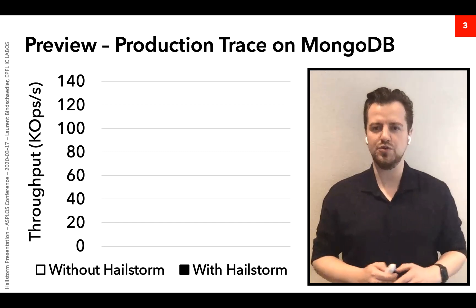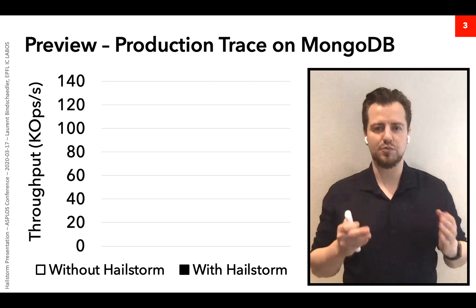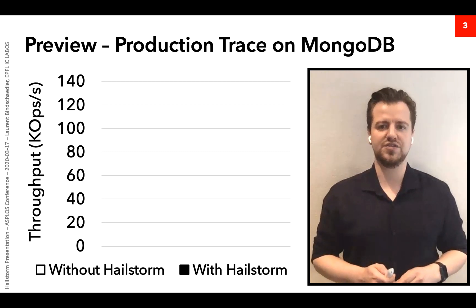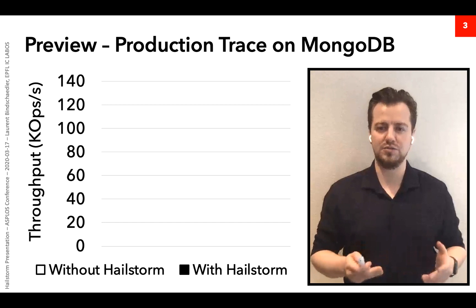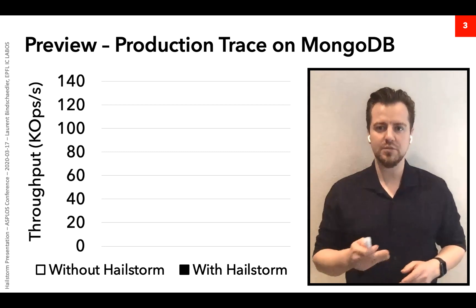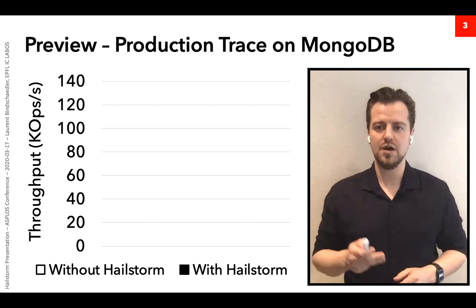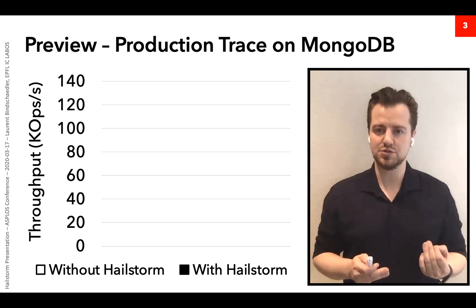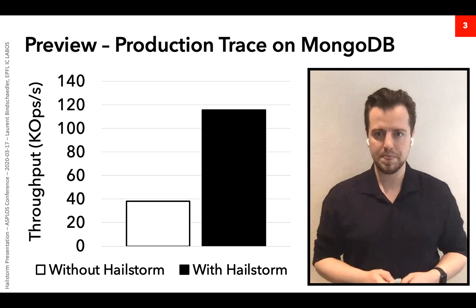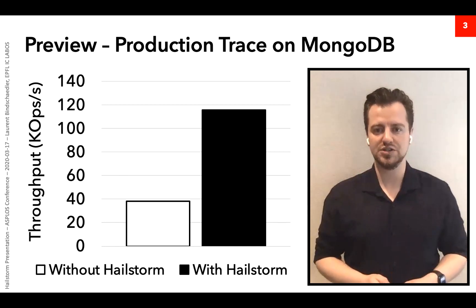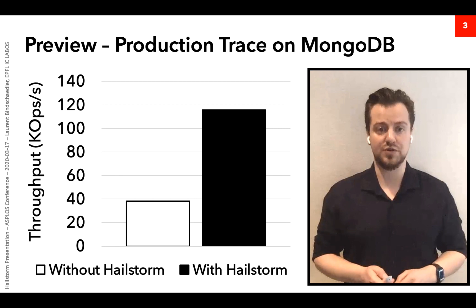Here's a preview of the results I will present later in this talk. This is for a production trace we got from Nutanix, executing on an eight-instance MongoDB database. We compare throughput in thousands of operations per second, both for MongoDB without Hailstorm and with Hailstorm. As you can see, by using Hailstorm we achieve almost three times higher throughput for this particular trace.